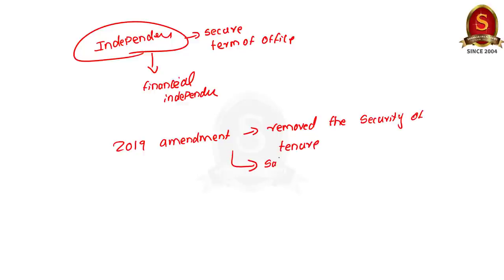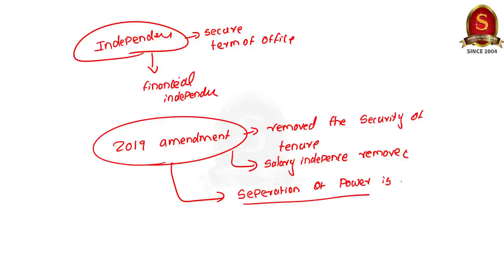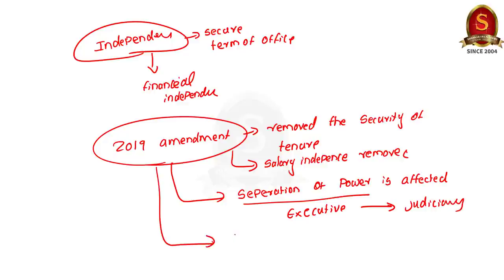The amendment, by diminishing the status of the Information Commission, reduced its ability to issue directives to senior government functionaries. The Information Commission is a quasi-judicial body. When the central government — the executive — gets into the function of the Information Commission, the executive is encroaching upon the rights of the judiciary. This goes against the concept of separation of powers, which is a part of the basic structure of the Constitution. Additionally, by taking over the controls of the State Information Commission, the central government has breached the principle of federalism, which also goes against the Constitution.